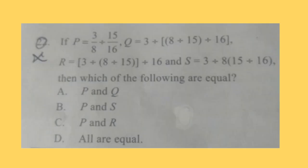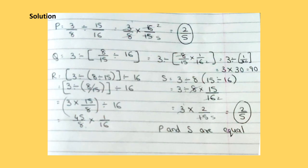Question 22: If P is equal to 3/8 divided by 15/16, Q is equal to 3 divided by 8. I can't read this, you have to read it yourself and try to solve it. Correct answer is option B, P and S. Here is the solution.